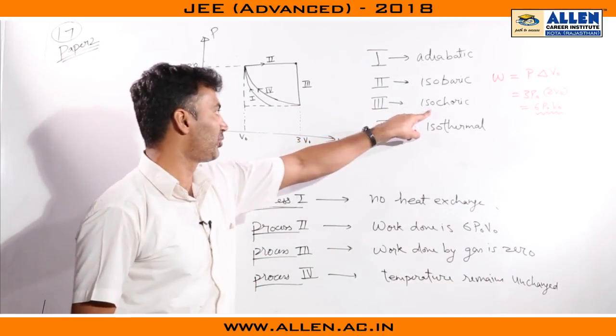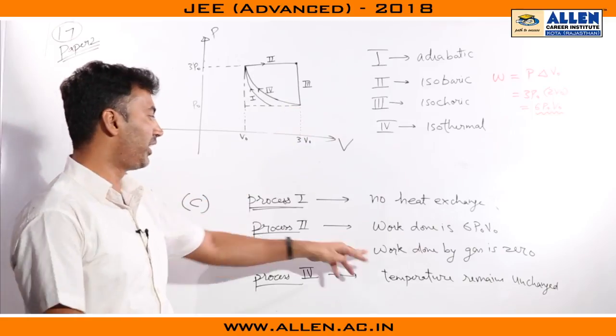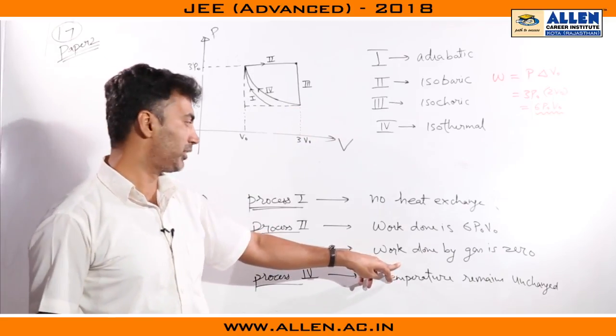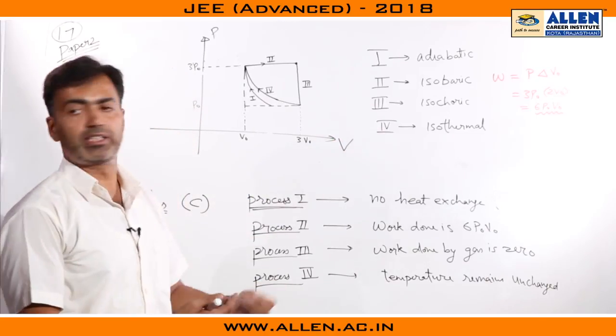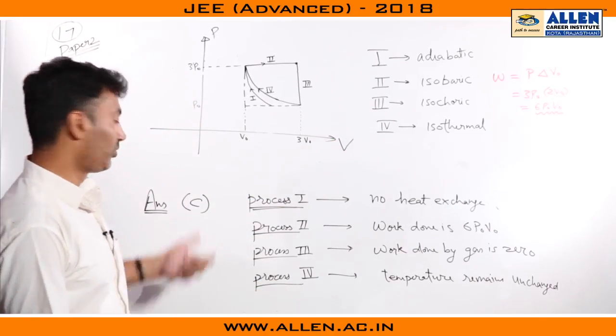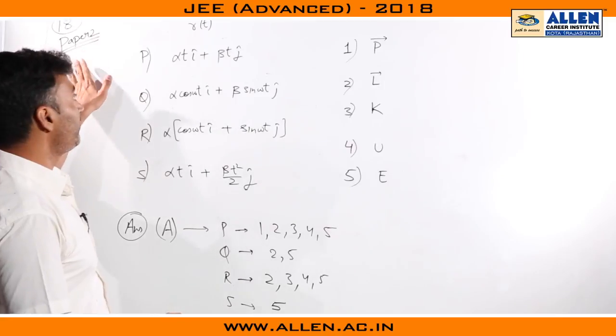The third process was isochoric, so there is no change in volume. Work done by the gas must be 0. The fourth process was isothermal and obviously no temperature must have changed, so the answer is C.